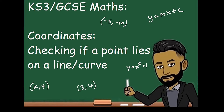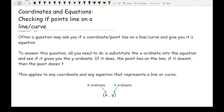Welcome to this latest video on 162math. In this video we're going over a subtopic in coordinates: checking if a point lies on a line or curve. Often a question may ask you if a coordinate or point lies on a line or curve and give you its equation. To answer this, all you need to do is substitute the x ordinate into the equation and see if it gives you the y ordinate. If it does, the point lies on the line; if it doesn't, it does not.